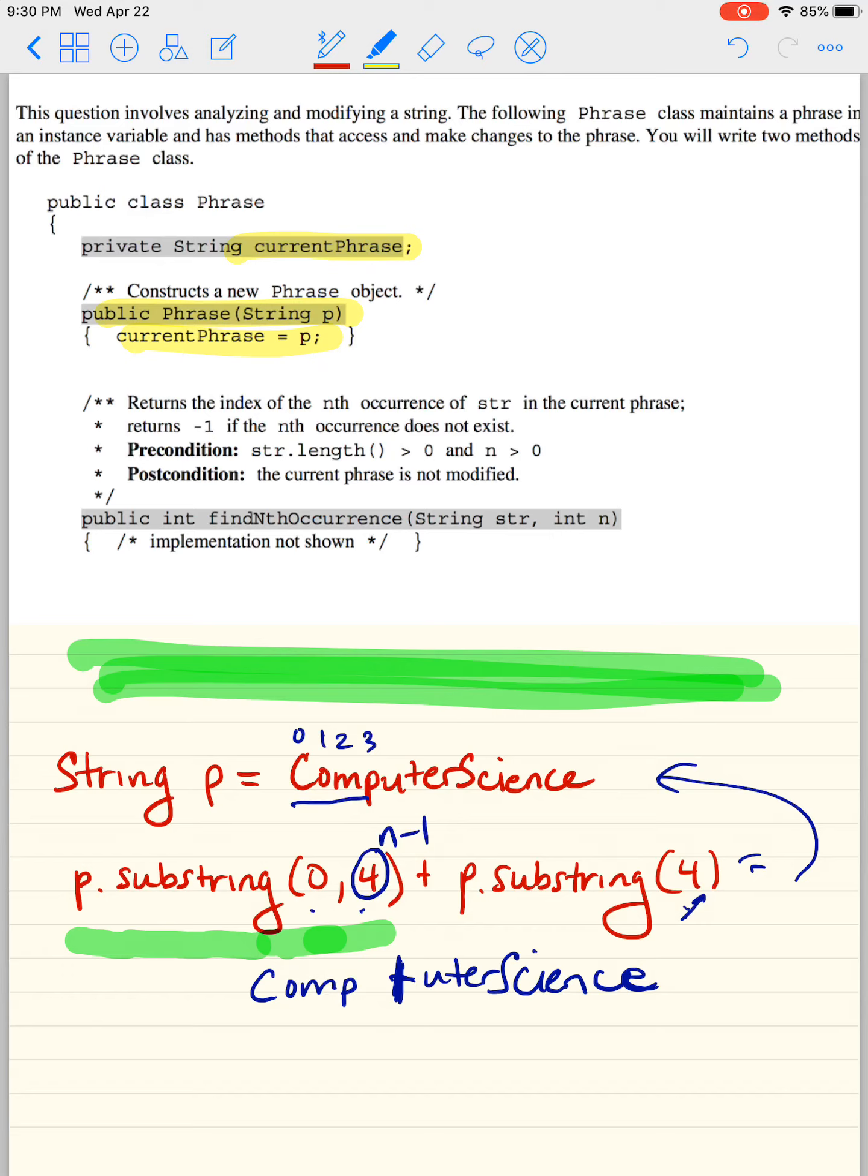Great. Now, this part here, public int findNthOccurrence. It basically is going to take two parameters, a string and an integer, returns the index of the nth occurrence of the string in the current phrase. Returns negative one if the nth occurrence does not exist. The current phrase is not modified. So we have this guy here and we're going to have to use him.